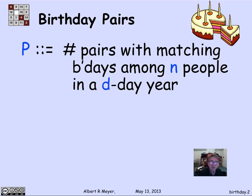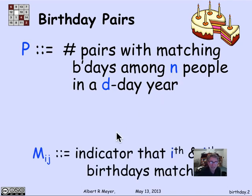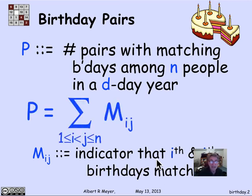P is the number of pairs of birthdays that match in this population of n people. Let's get a grip on P by thinking of it as a sum of indicator variables. Let Mij be the indicator variable that the i-th and j-th people among the n have a matching birthday. The number of matching birthday pairs is then the sum over all possible pairs of people of whether or not they have a matching birthday — the sum of these indicator variables Mij. The number of these indicator variables is n choose 2.